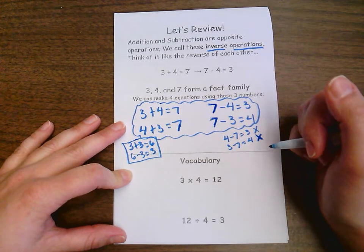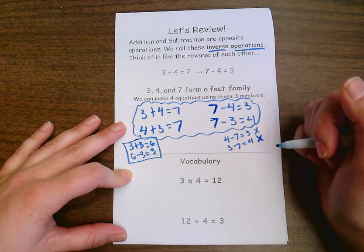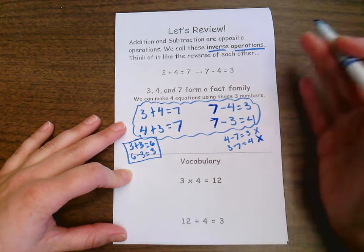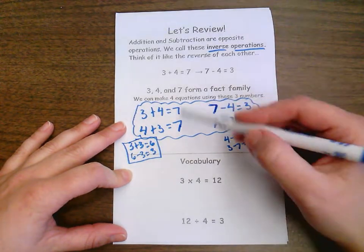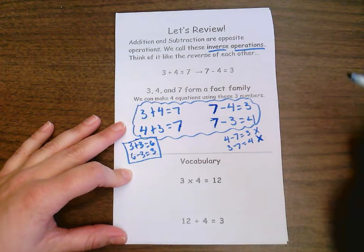There are special cases when we start talking about division where we'd only have three equations. But almost always you're going to have four equations in your fact family.